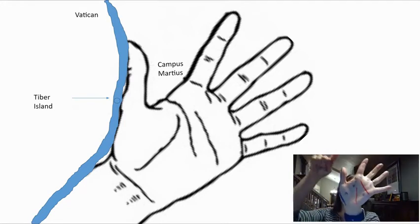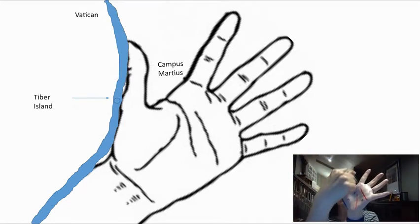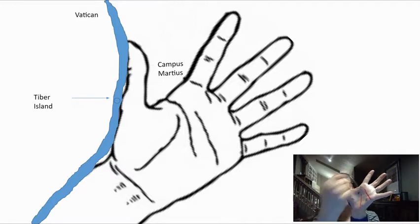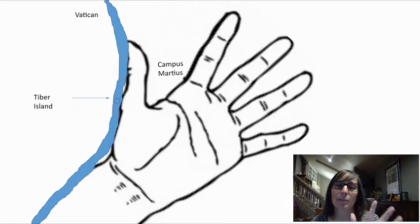And the Vatican would be over here, the Vatican that's there today. The Campus Martius is the space between my thumb and my fingers. We'll talk about why that's important. But when Rome first started, it was just kind of a wet, marshy area.